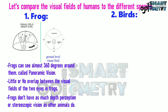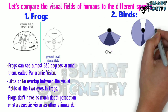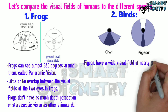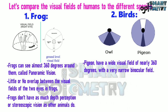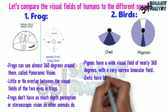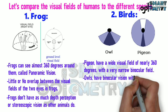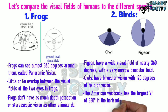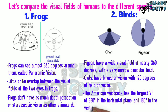2. Birds: pigeons have a wide visual field of nearly 360 degrees with a very narrow binocular field. Owls have binocular vision with 120 degrees of field of vision. The American woodcock has the largest visual field of 360 degrees in the horizontal plane and 180 degrees in the vertical plane.